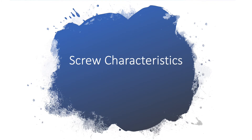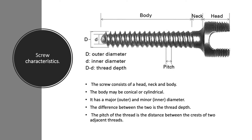Now let's analyze the characteristics of a pedicle screw itself. The screw consists of a head, neck, and a body. The body can be conical or cylindrical. It has an outer or major diameter and an inner or minor diameter, and the difference between the outer and inner diameter is the thread depth. The pitch of the thread is the distance between the crest of two adjacent threads.